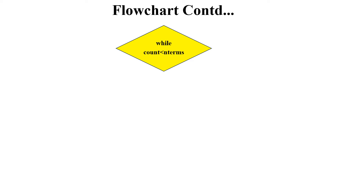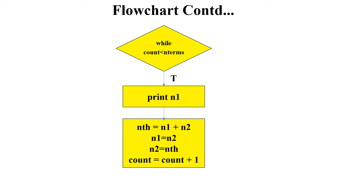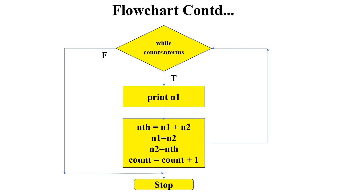If the user has not entered a negative number and has not entered one, we proceed to the actual generation of the Fibonacci sequence using a while loop. While count is less than n_terms, we print n1, then perform the assignments: nth = n1 + n2, n1 = n2, n2 = nth, and count = count + 1. We keep repeating this until the condition fails, at which point we stop execution — the Fibonacci sequence has been generated.